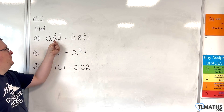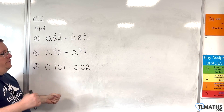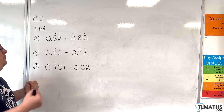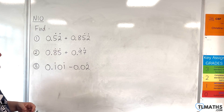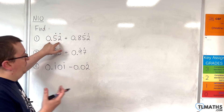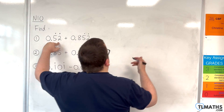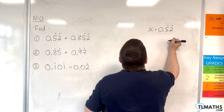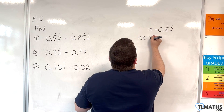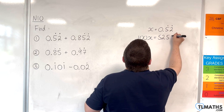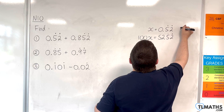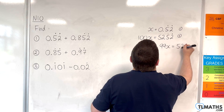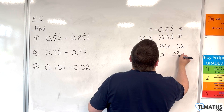0.52525252, et cetera, plus 0.852525252, et cetera. If I was to convert this into fractions, let's just run through the process so we can remind ourselves. For the first one, I would let x be 0.52 recurring. I would multiply through by 100 to make sure my recurring parts sync up. Then do equation two, take away equation one, and I'll get 99x is equal to 52. So x would be equal to 52 over 99.